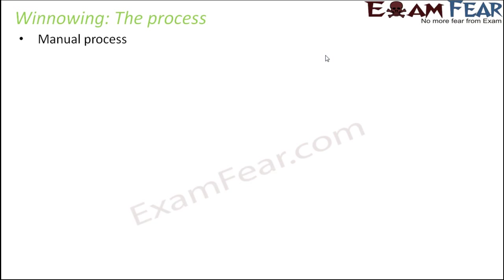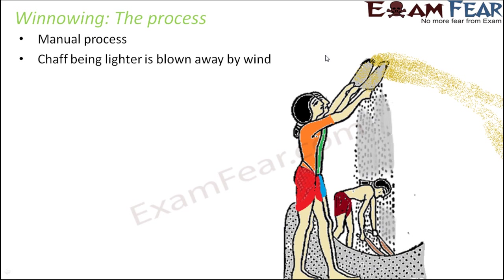This is how the process of winnowing happens. It is a manual process where people take a container — a plate-like thing — put the mixture of grain seeds and chaff in it, and then move it as you can see in the picture. As the wind blows, the chaff, being lighter, gets carried away by the wind.